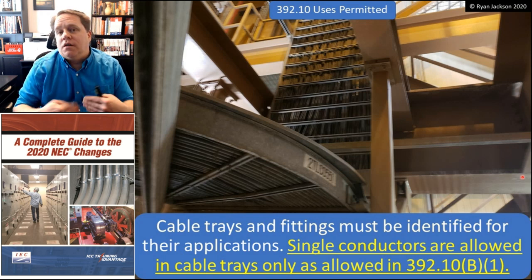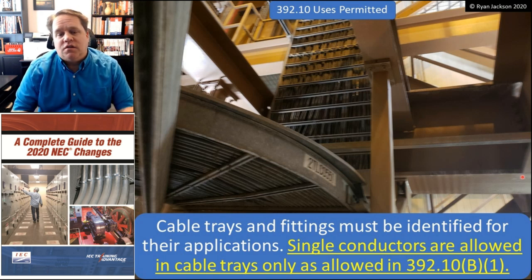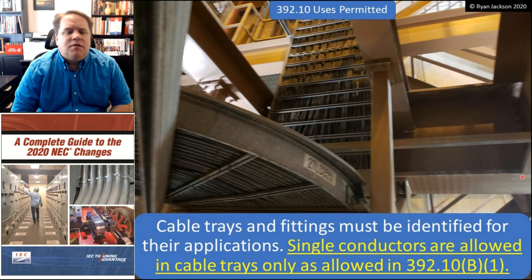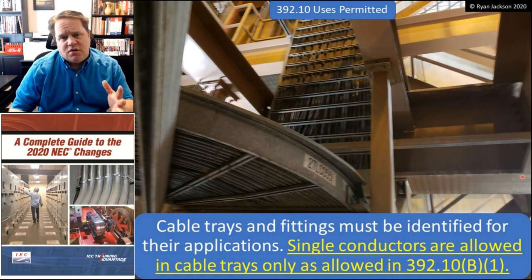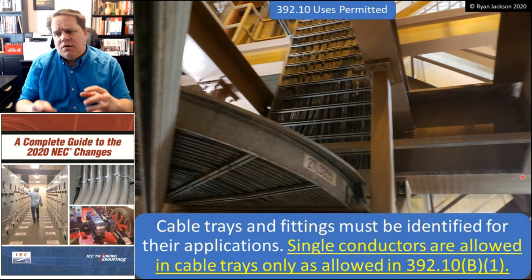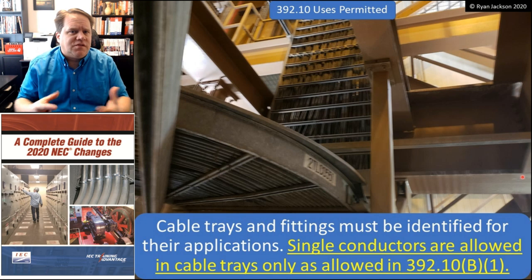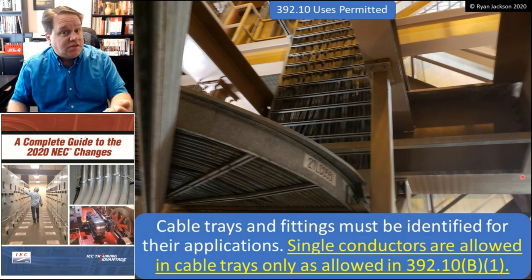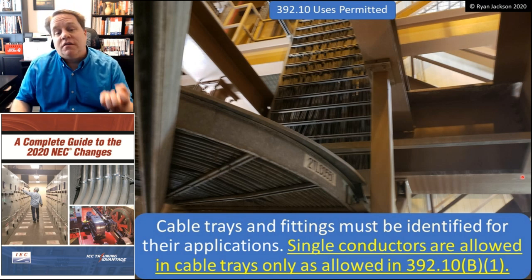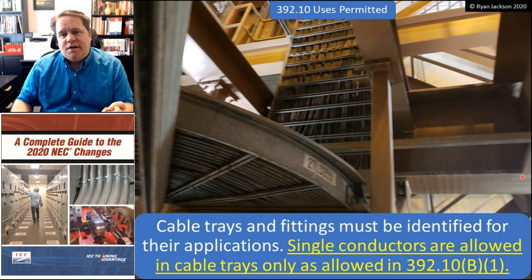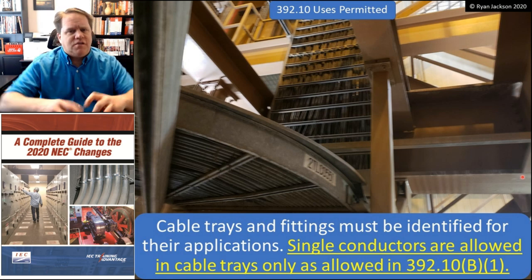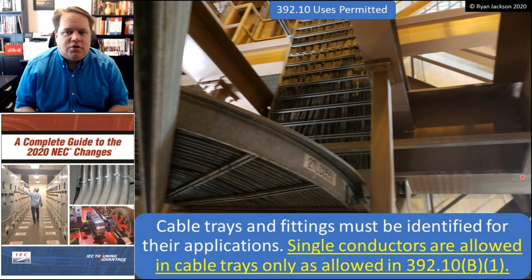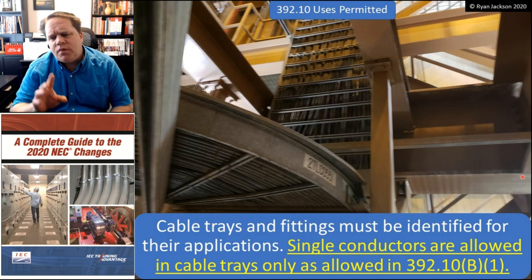392.10 also gives a nice little allowance. First of all, cable trays and fittings have to be identified for the application — you can't just string a bunch of stuff together and call it a cable tray. It doesn't necessarily have to be listed, but it does have to be identified for the application, meaning it's designed as a tray and designed for use as a tray.